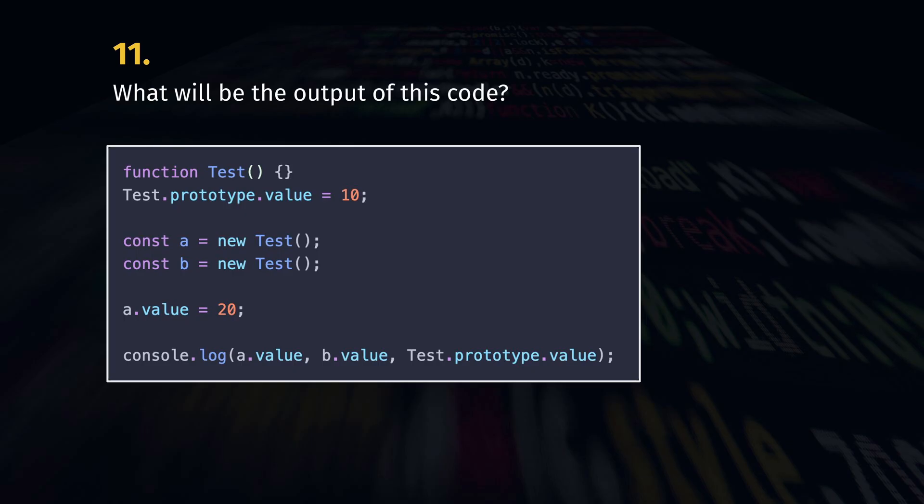What will be the output of this code? It's 20, 10 and 10. Our untouched prototype object is the source of truth unless the object such as A has its own property with a new value.